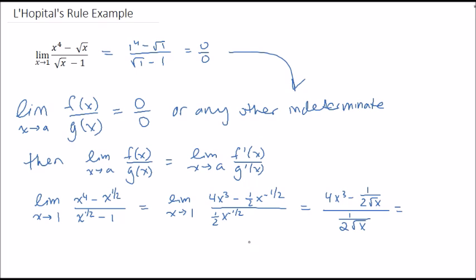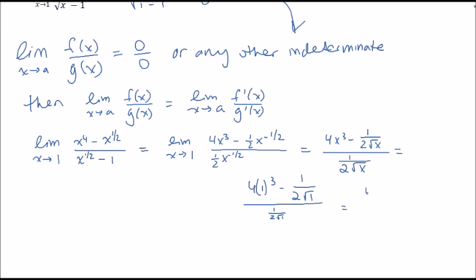So let's try subbing this in one more time and see if we can get a number. So now it's going to be 4 times 1 cubed minus 1 over 2 square root of 1, over 1 over 2 square root of 1. So we get 4 minus 1 over 2 square root 1 over 1.